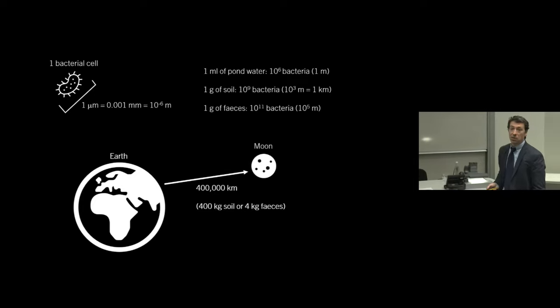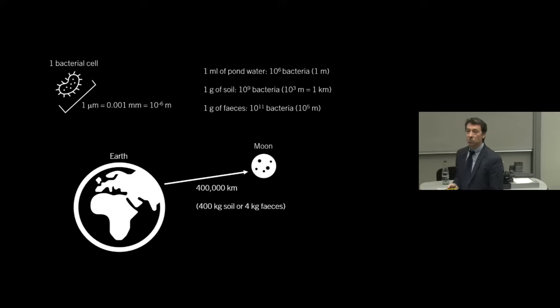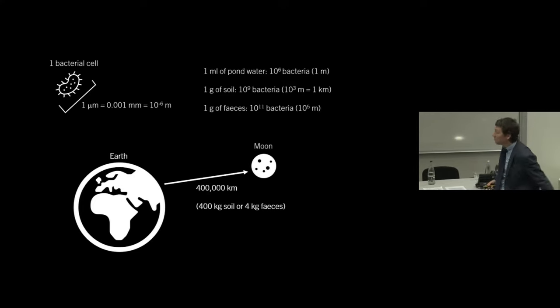If we think of the distance from the Earth to the Moon, it's about 400,000 kilometers, which is equivalent to about 400 kilograms of soil, or the amount of bacteria in four kilograms of feces, which is rather a lot of feces, but it's about the average deposit of an elephant, I found out. So one elephant deposit equals the stack of bacteria from here to the Moon.